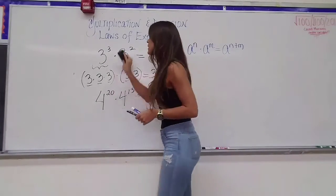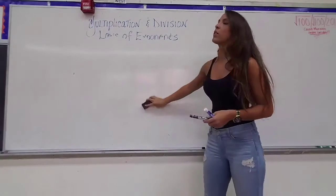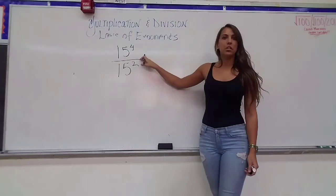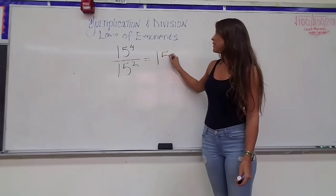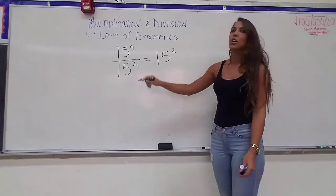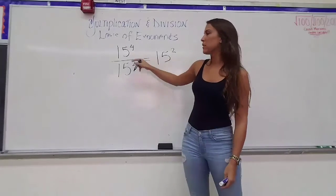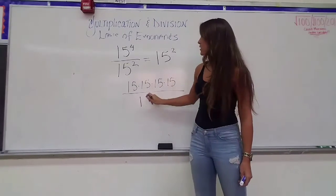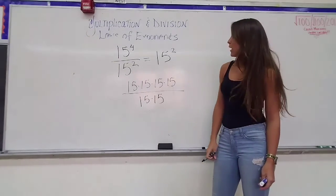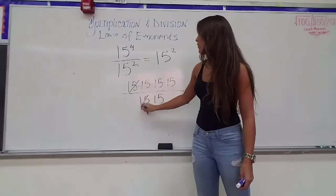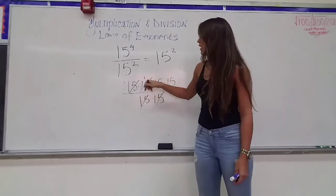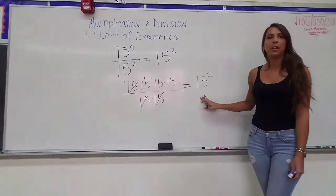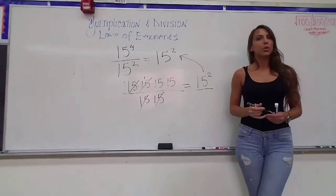Now let's do the division law of exponents. The division law also only works if you've got the same base. So if we have 15 to the 4th divided by 15 to the 2nd — same base — the law says keep that base and subtract the exponents: 4 minus 2 to get 2. Expanding 15 to the 4th gives 15 times 15 times 15 times 15, and the denominator is 15 times 15. Two of the 15's cancel, leaving 15 times 15, which is 15 squared — the same answer as the shortcut.